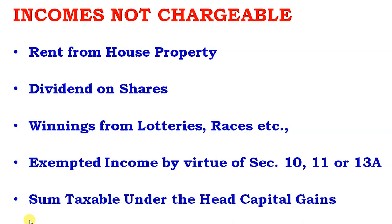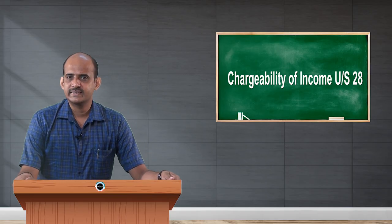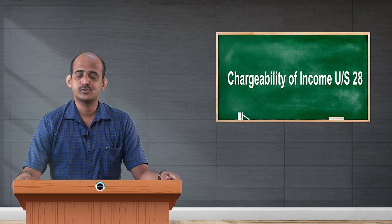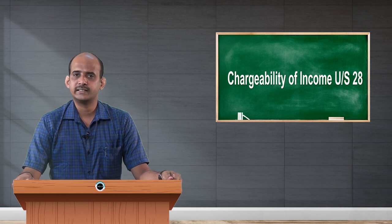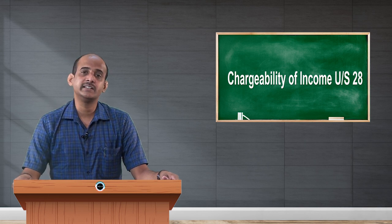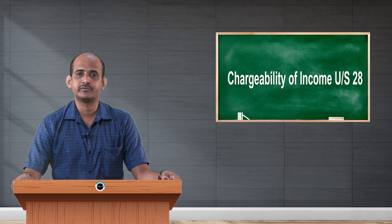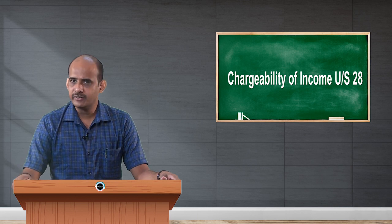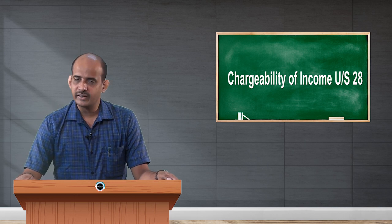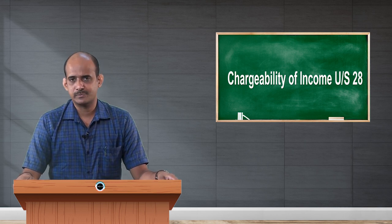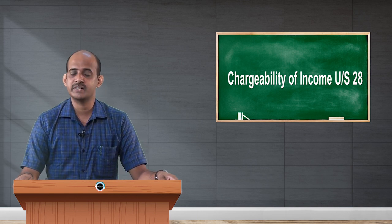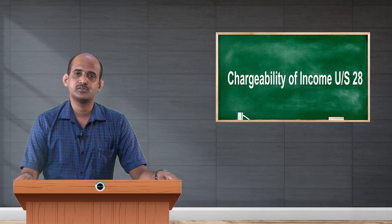Number 1 is rent from house property. When a person is involved in constructing residential house properties and giving them on rent, earning rental income, it is better suited to record that income as income from house property than income from business and profession. Though the activity of this individual looks like a business activity, such incomes are to be recorded as income from house property as per the Income Tax Act. Though the activity looks like business, it will not be shown as income from business and profession.